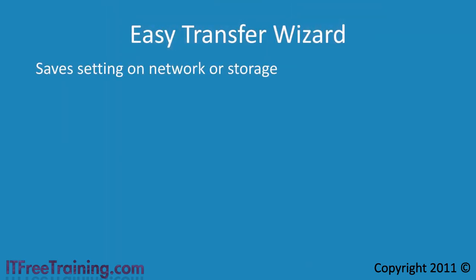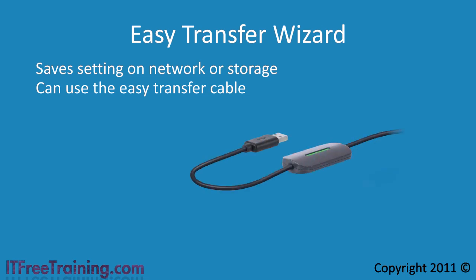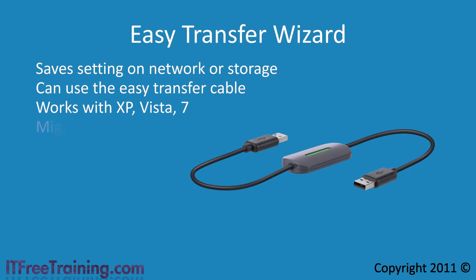The Easy Transfer Wizard works by saving your settings to the network or to external storage such as a USB drive. If both computers are near each other, you can also use the Easy Transfer cable — a USB cable plugged into both computers to transfer settings between the two PCs. The Easy Transfer Wizard works with Windows XP, Windows Vista, and Windows 7 and is included with these operating systems. It is best to download the latest version from Microsoft before use. Note that the wizard migrates user settings and data but does not migrate software or applications, so you will need to reinstall your applications afterward.